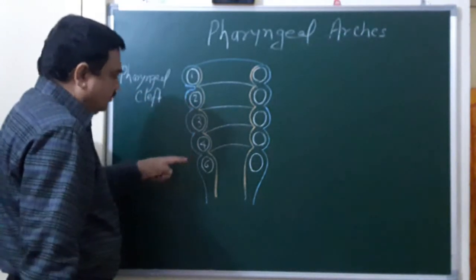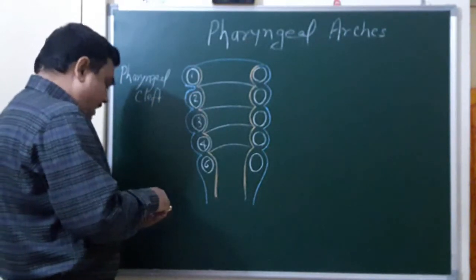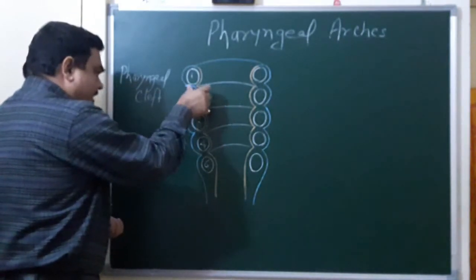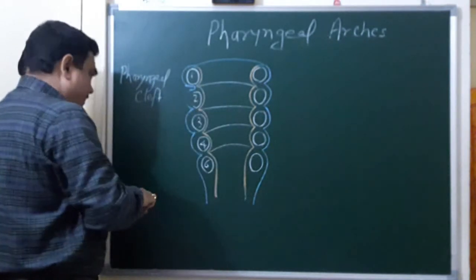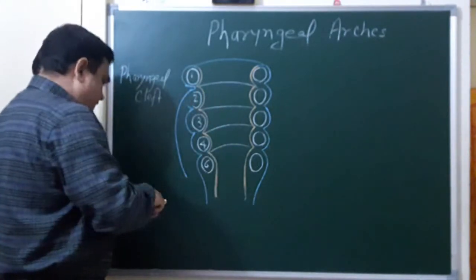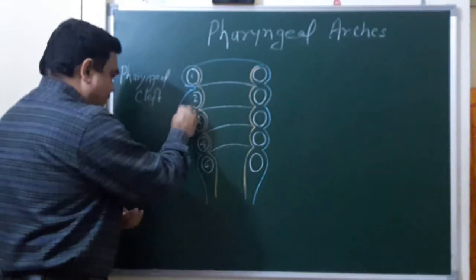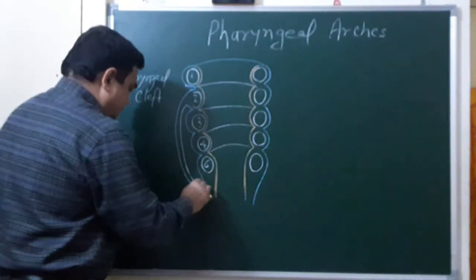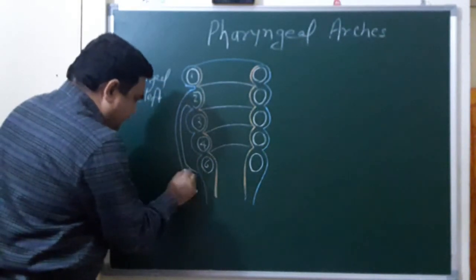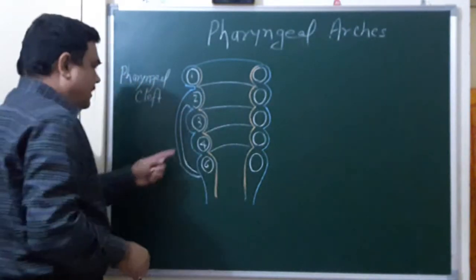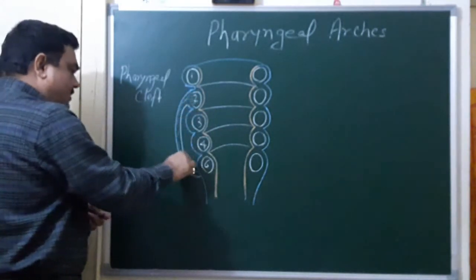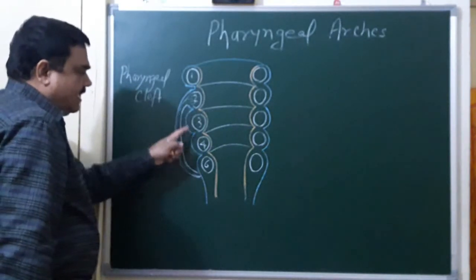And second, third, fourth cleft are covered by, here is second pharyngeal arch. It grows faster than other arches like this, like this. And here it joins with. So the second pharyngeal arch overhang and traverse this second, third, fourth cleft.